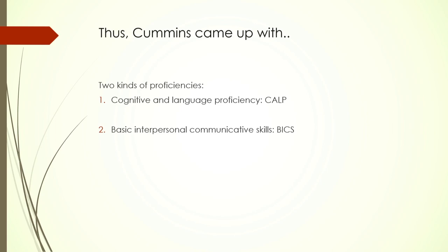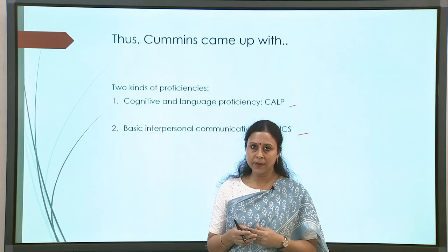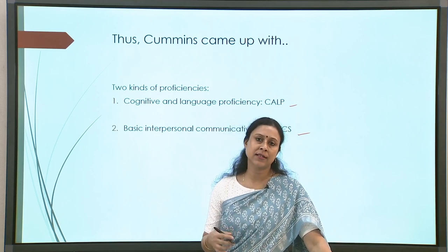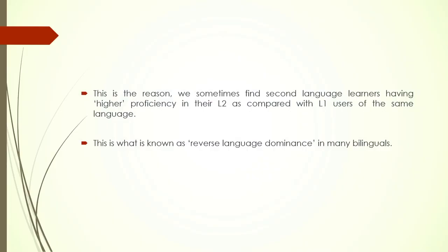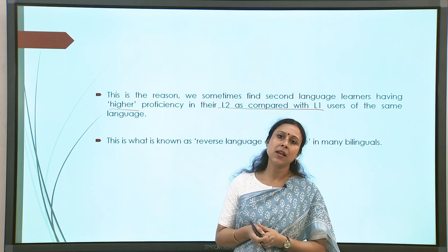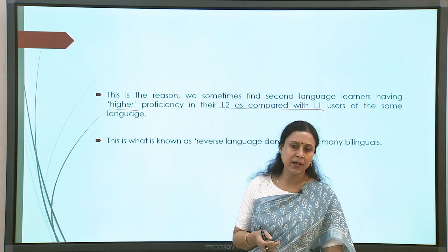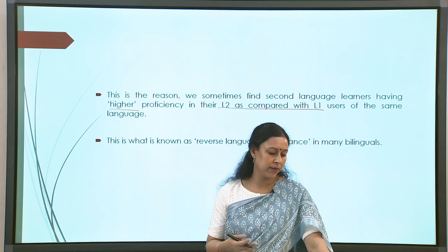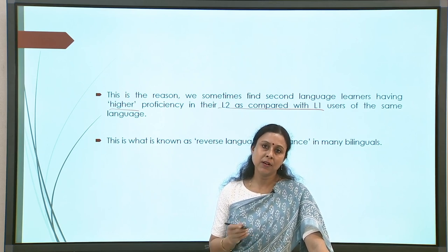Based on this, two possibilities have been proposed: one is called Cognitive and Academic Language Proficiency (CALP), and another is called Basic Interpersonal Communicative Skill (BICS). The first kind is what we have been traditionally testing through tasks connected to IQ level, academic performance, and literacy level. However, BICS is also a kind of proficiency level which does not necessarily depend on IQ level. This is why we sometimes find second language learners having higher proficiency in L2 compared to L1 users — because L2 is often taught through formal training in standard academic language, leading to what is called reverse language dominance.